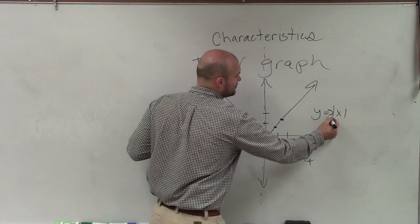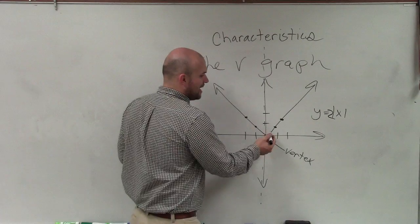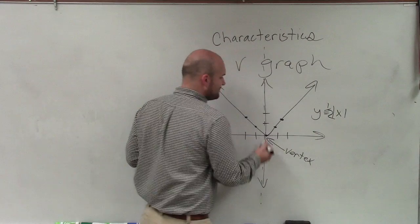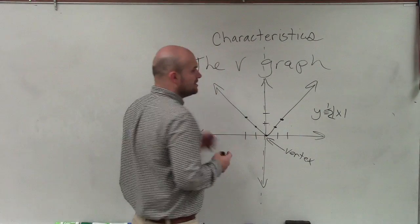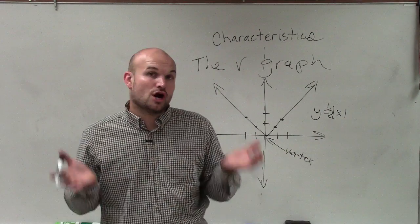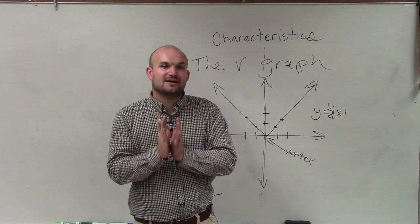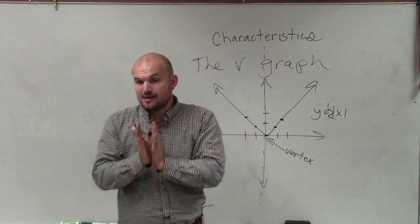However, if I'm going to input some numbers like 2, rather than going up 1 over 1, I'm going to go up 2 over 2. Or if that was 1 half, I'd go up 1 over 2. So when that value a is larger than 1, what that does is that compresses the graph, and it becomes a much more narrower V-shape.